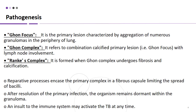Numerous granulomas aggregate in the periphery of the lung to form the Ghon focus, which is the primary lesion of tuberculosis. The Ghon focus combines with enlargement of lymph nodes to form the Ghon complex. Ranke's complex is the Ghon complex which undergoes fibrosis and calcification. The reparative process encases the primary complex in a fibrous capsule limiting spread of bacilli. After resolution of primary infection, the organism remains dormant within the granuloma, and any insult to the immune system can activate TB at any time.